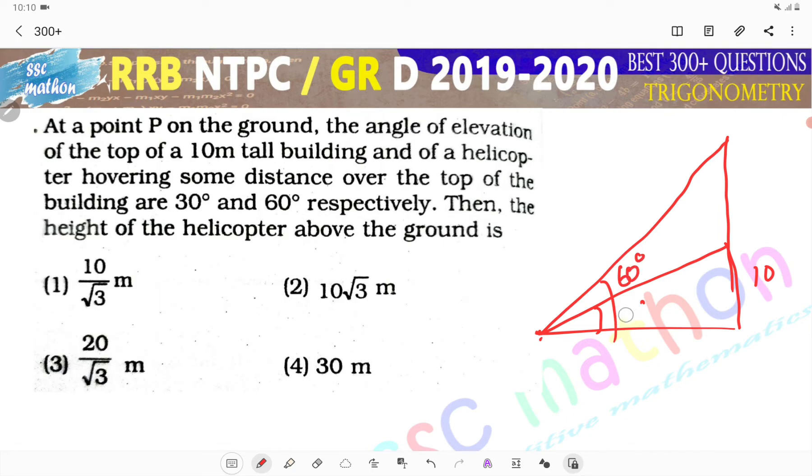Do you understand? Yes sir. Now look at one thing. This is 60 and this is 30 degrees. Now look at one thing. If this is 10 meters, it is opposite to 30. Then opposite to 60, it is 10 root 3.